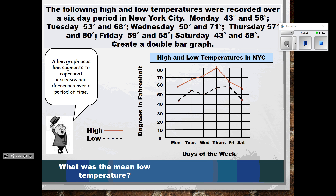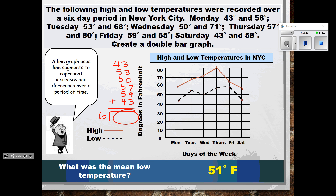What was the mean low temperature? We do the same thing — look at the low temperatures, add them together, and divide by six. Our low temperatures were 43, 53, 50, 57, 59, and 43. Adding those together and dividing by six, we find the average low temperature was 51 degrees.